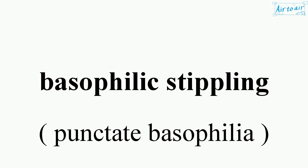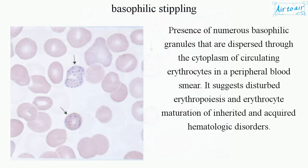Basophilic stippling refers to the presence of numerous basophilic granules that are dispersed through the cytoplasm of circulating erythrocytes in a peripheral blood smear. It suggests disturbed erythropoiesis and erythrocyte maturation in inherited and acquired hematologic disorders.